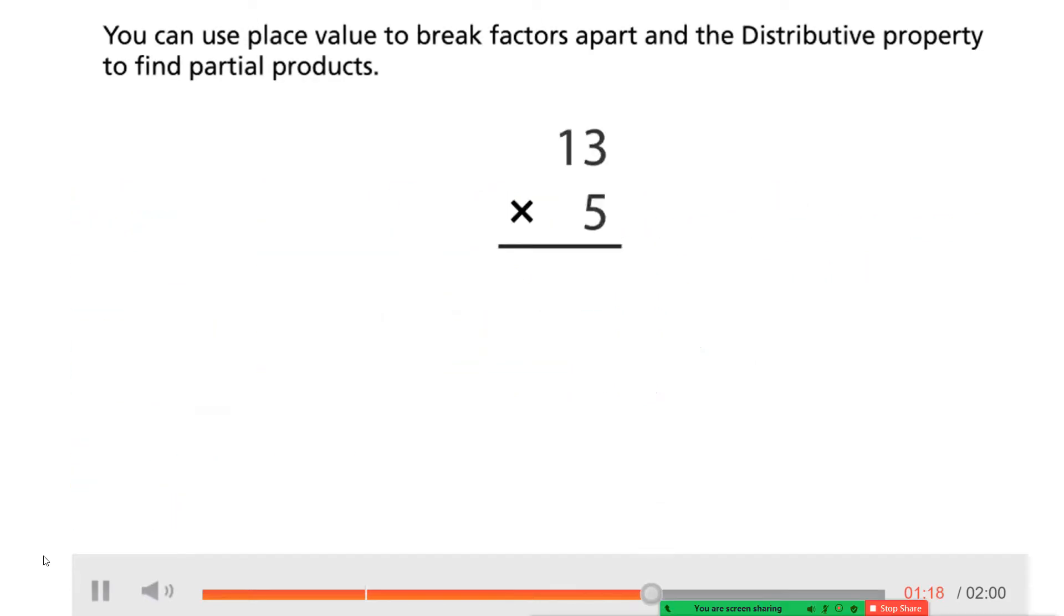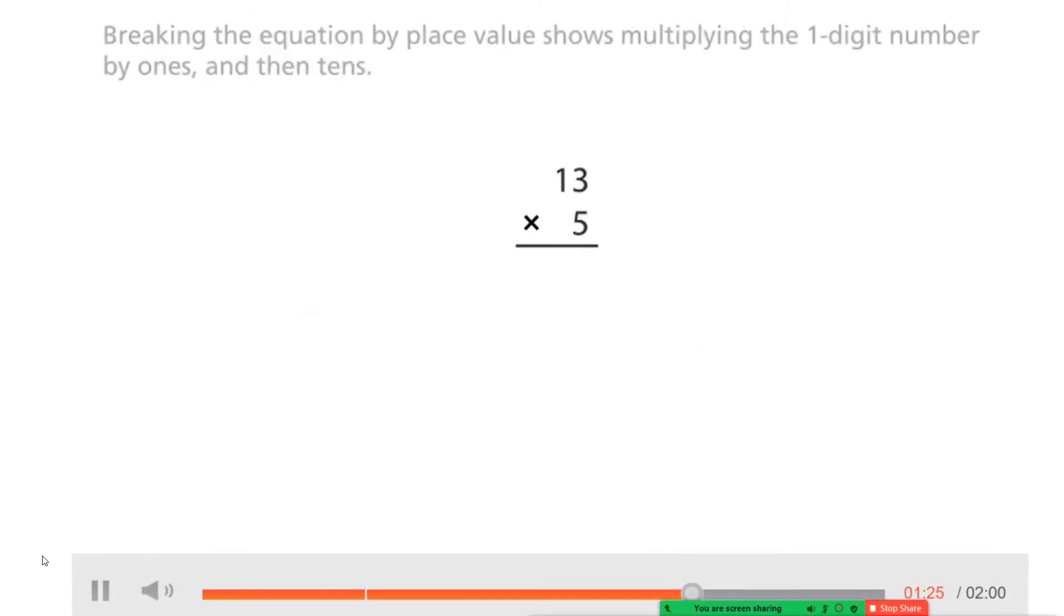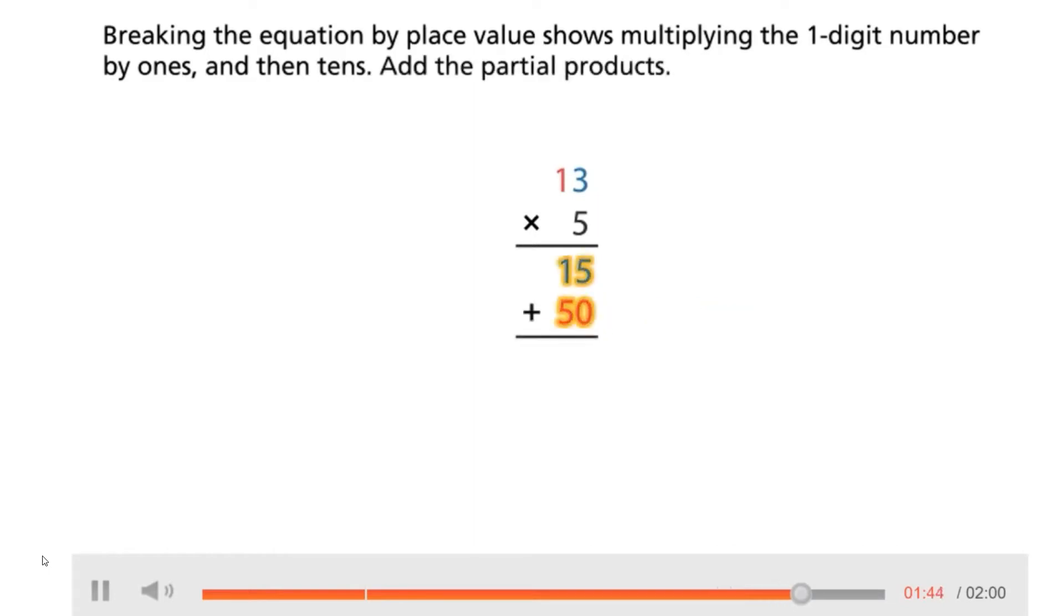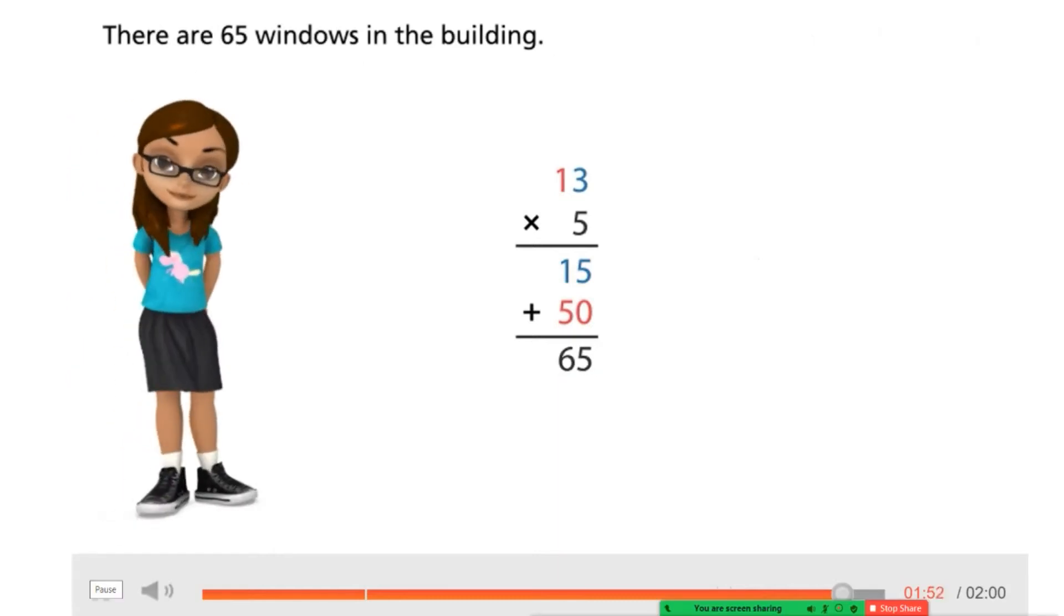You can use place value to break factors apart and the distributive property to find partial products. Breaking the equation by place value shows multiplying the one-digit number by ones and then tens. 5 times 3 ones equals 15. 5 times 1 ten equals 50. Add the partial products. 13 times 5 equals 65. There are 65 windows in the building.